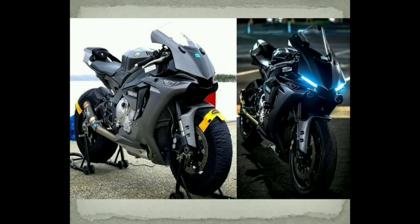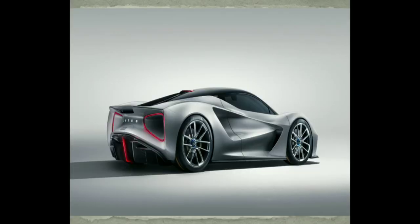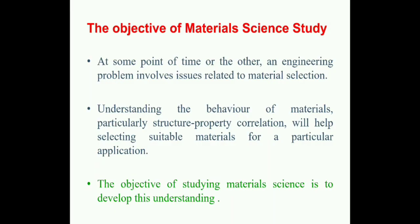This subject provides a clear idea about how to choose a particular material for a particular application, and this shows the importance of this particular subject for mechanical engineering students. When you look at the tires, the material used for making the tires is different from the material used for making the body, the frame, the silencer, the seat, and the tank. Similarly, in this car also we can see different materials being used.